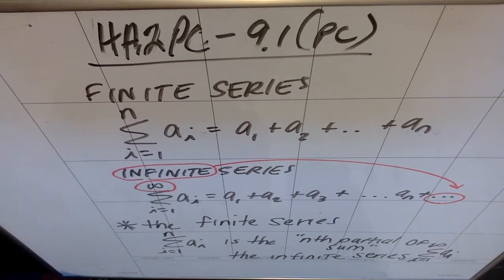So the last bit of stuff we're going to do in this section is to just talk about the difference between a finite series and infinite series. So the difference is fundamentally just what the top bound is, what this upper limit is.